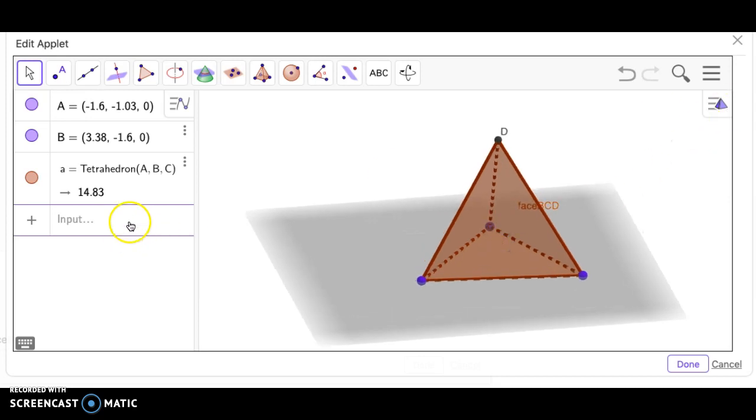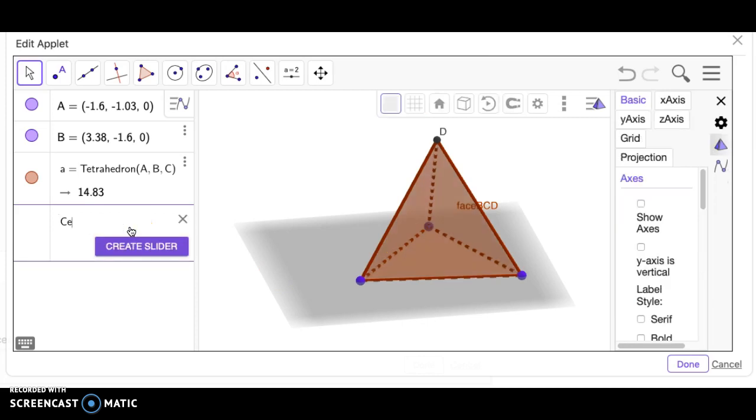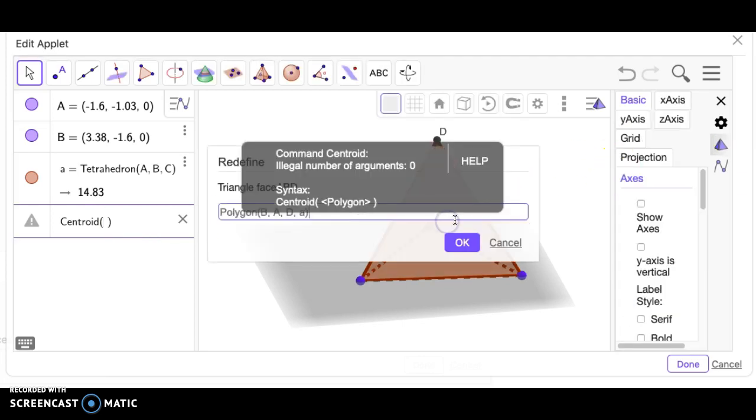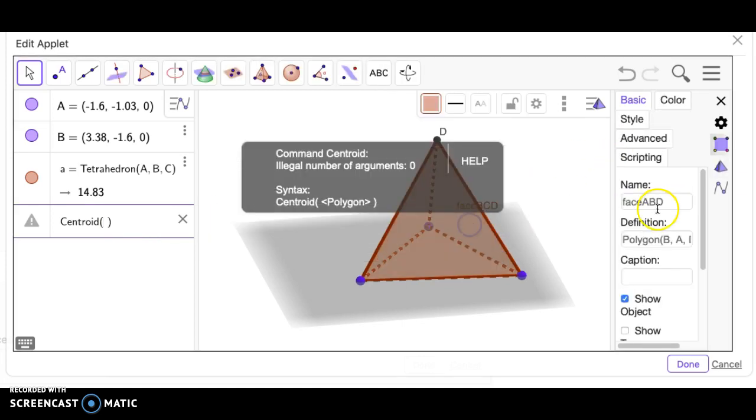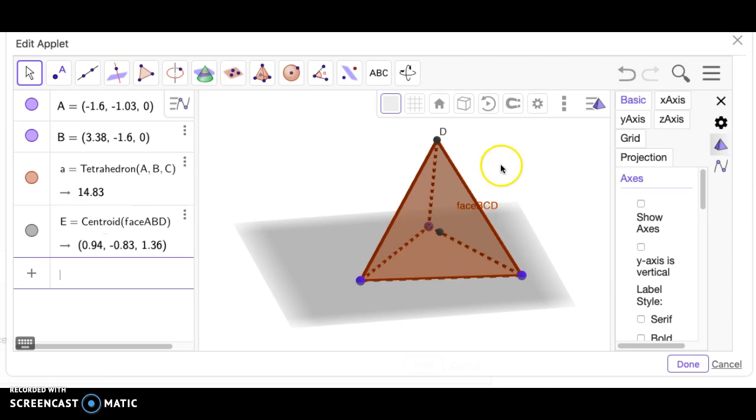So to do this, we are going to go up here to the settings and get the face name of this specific face. Then we're going to type in centroid and re-click on this.